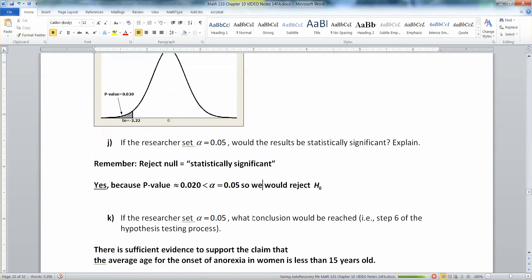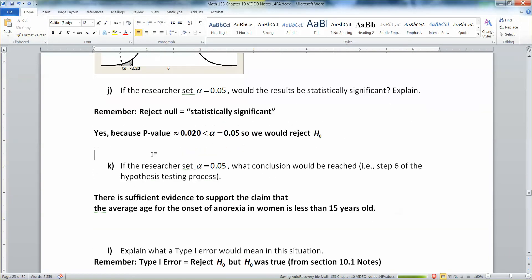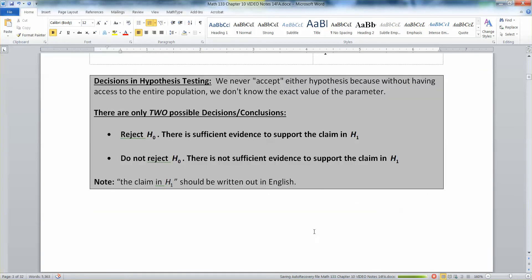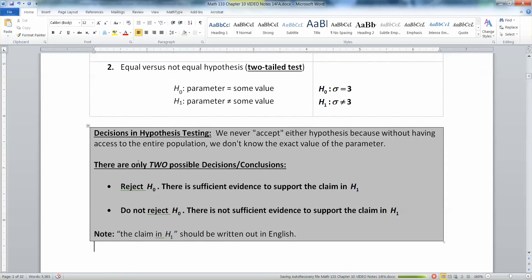All right then what conclusion would you reach? Well if you reject the null hypothesis then you're going to say there is sufficient evidence to support the claim that the average age for the onset of anorexia in women is less than 15 years old. Remember we saw that setup in section 10.1. I'll just flip back to the notes real quick in 10.1 so you can see it. If when you reject H0 the conclusion you draw is there is sufficient evidence to support the claim and then write out what your claim was in English.